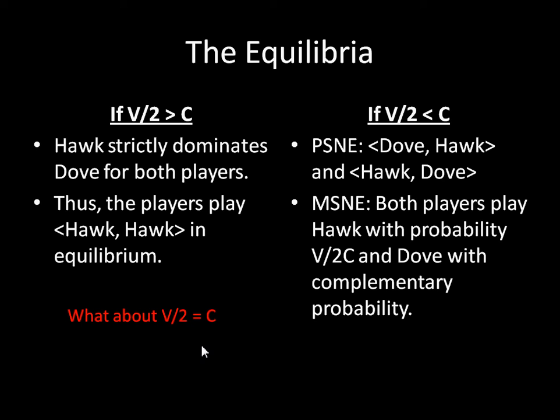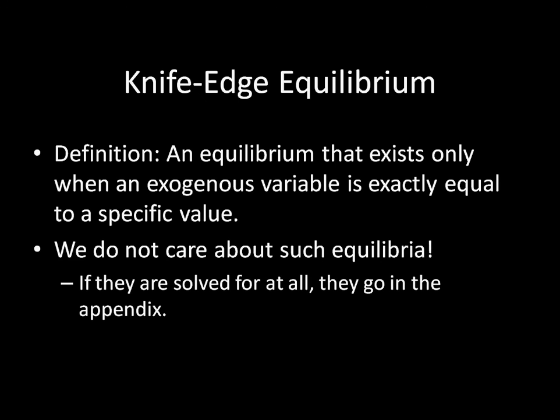If it were just a little bit bigger than that, we'd be in one case. If it were just a little bit smaller, we'd be in the other case. So we're only interested in this when V over 2 is exactly equal to C. We call it a knife-edge equilibrium, and as it turns out, we don't really care too much about such equilibria. If you're reading a journal article and the game has a knife-edge equilibrium in it, you'll see that if it's solved for at all, it tends to be in the appendix. Usually the author will just say, for completeness, I'll solve this knife-edge condition in the appendix, but I'm not going to base my findings off of that. Sometimes it might just be left out entirely.